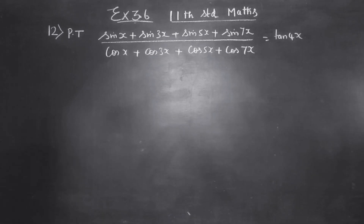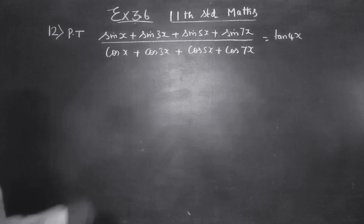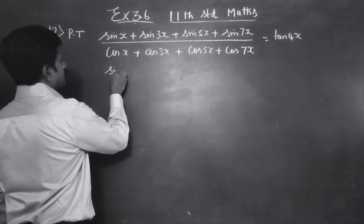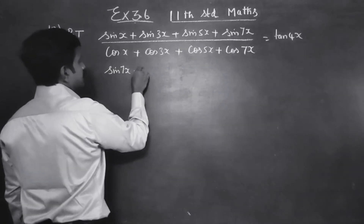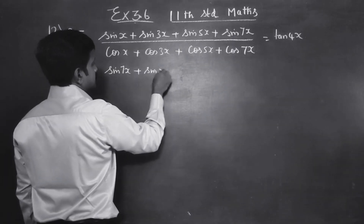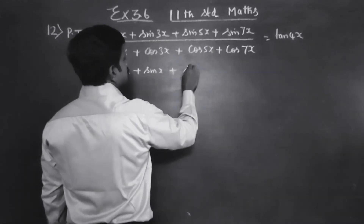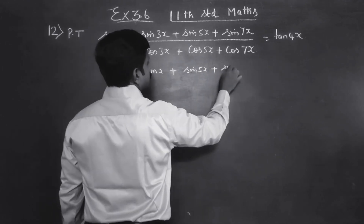Dear Learn Standard students, in exercise number 3.6, we have to prove the answer is tan 4x. First of all, I will combine sin 7x with sin x, then sin 5x with sin 3x.